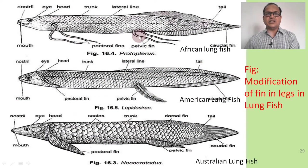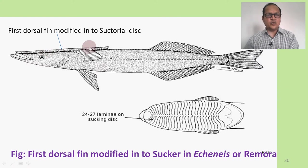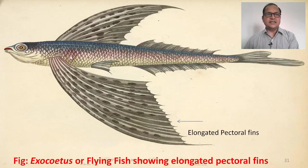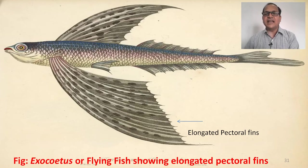These are the limb-like structures — pectoral and pelvic fins modified into fore limbs and hind limbs, lobe-like limbs, with the help of which they can crawl on land. This is the suctorial disc — the first dorsal fin is modified into the suctorial disc in Echineis or remora, also called shaker fish. This is the Exocoetus or flying fish, in which pectoral fins are elongated and modified into a wing-like structure.